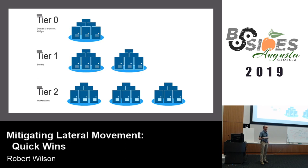This is Microsoft's tiering model, which has to do with privileged access workstations. You want your tiers to use similar firewall rules. Down at tier two, those are all workstations — workstations don't talk to other workstations. They talk to servers and domain controllers. Servers generally don't initiate communications to workstations unless it's something like Nessus or a scanner. A workstation calls up a web server; web servers don't call workstations.